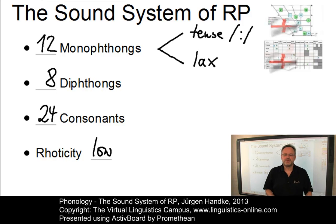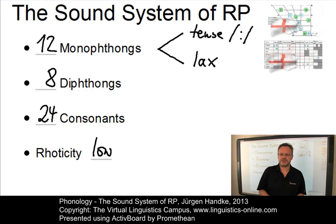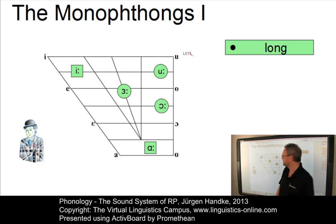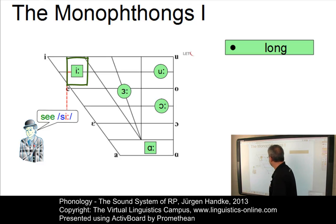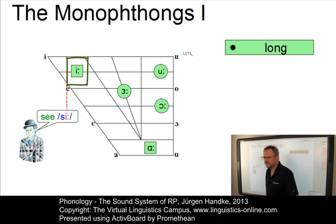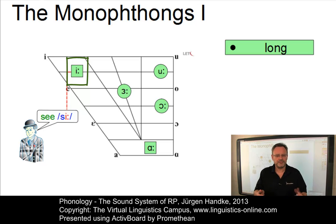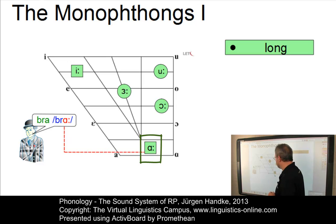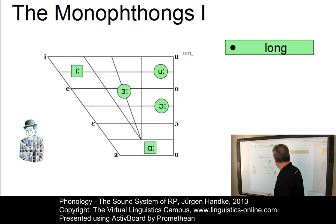Let us now look at the phonemes, using one keyword in each case and listening to an audio example produced by a native speaker of RP, pointing out the special properties of pronunciation. Starting with the long or tense monophthongs: the first vowel is slightly diphthongized in RP — most non-native speakers use a true monophthong and often make it too high. The second monophthong, as in 'bra,' is clearly a low back vowel and not problematic for many foreigners.